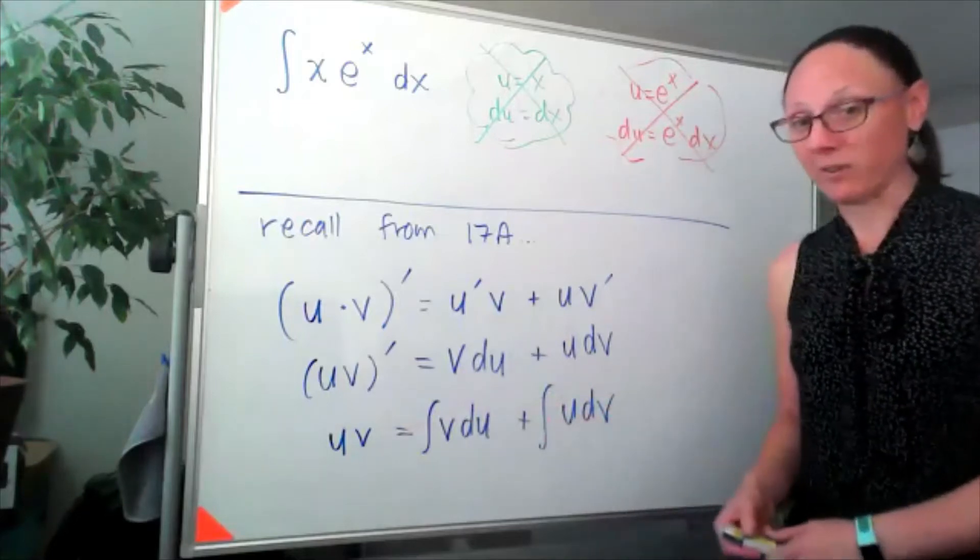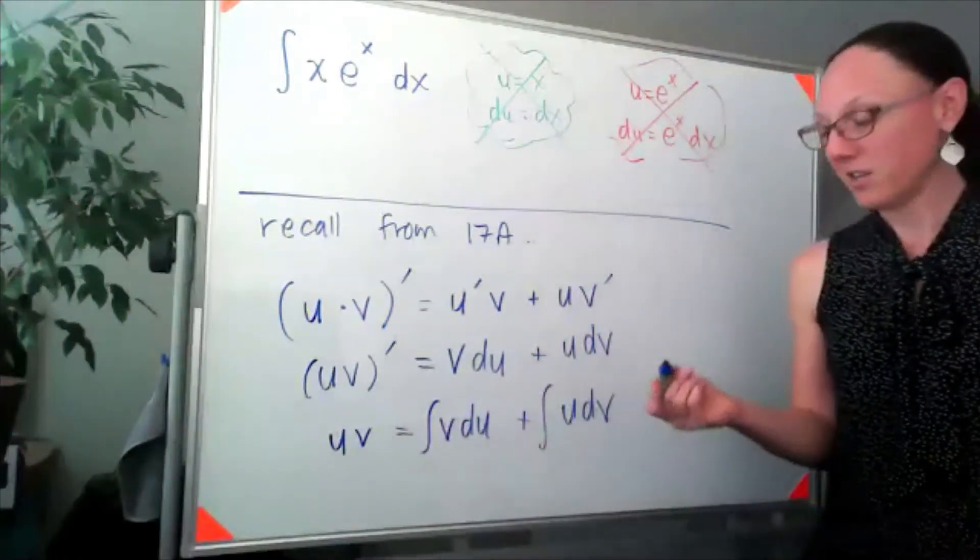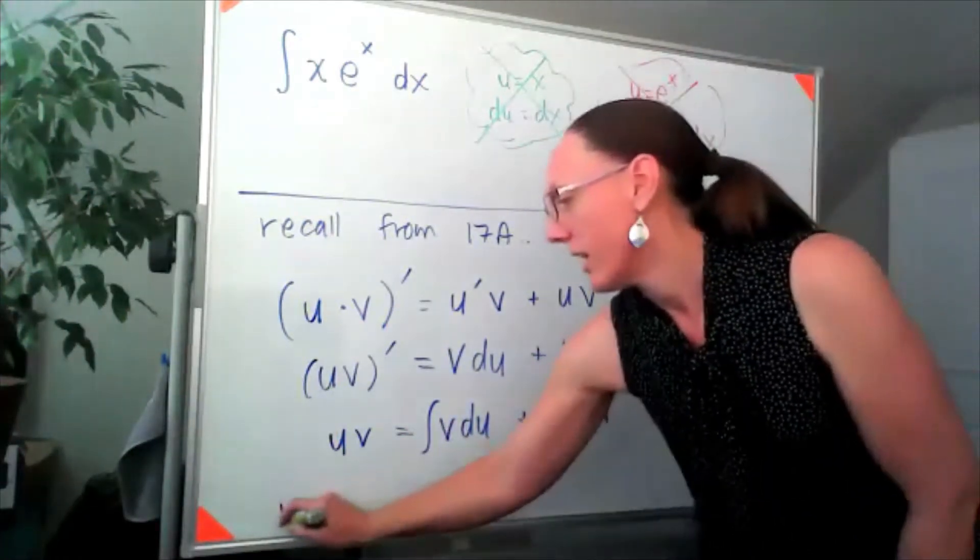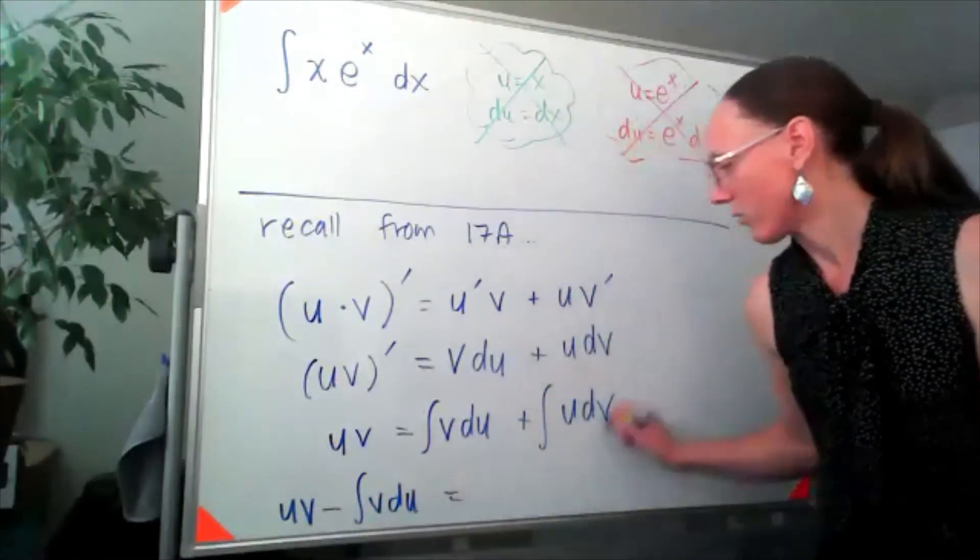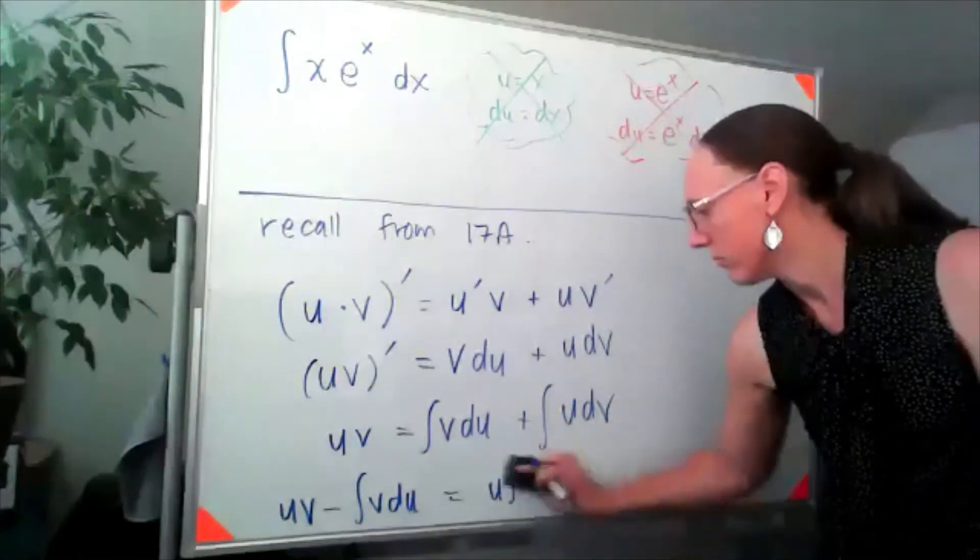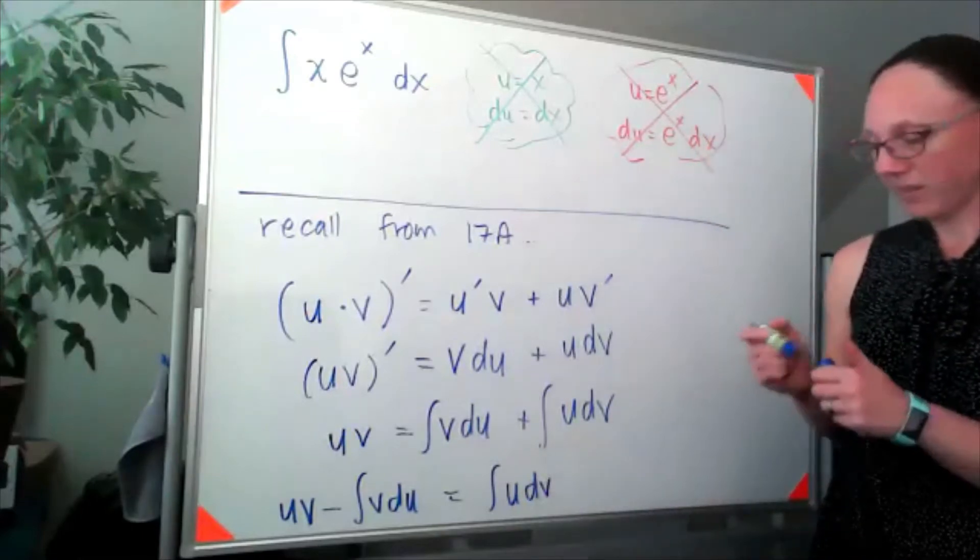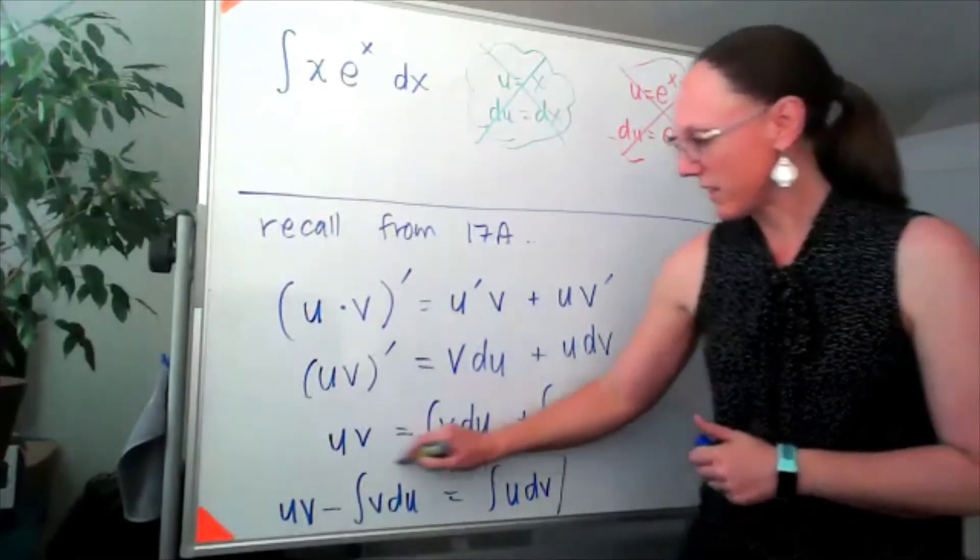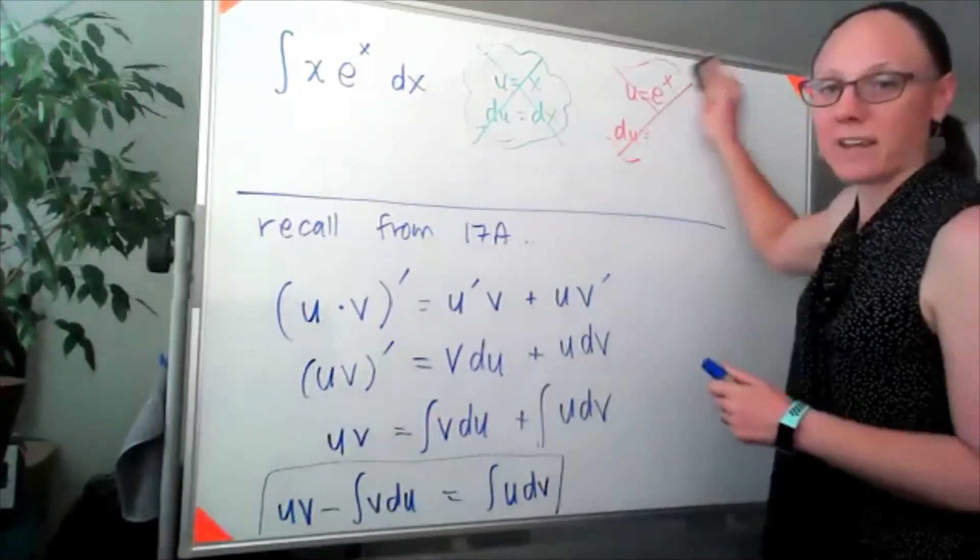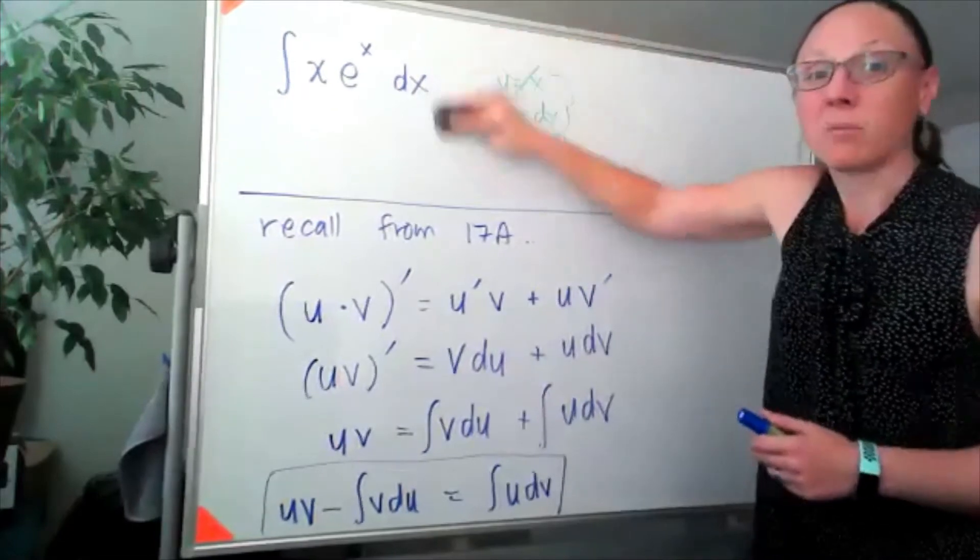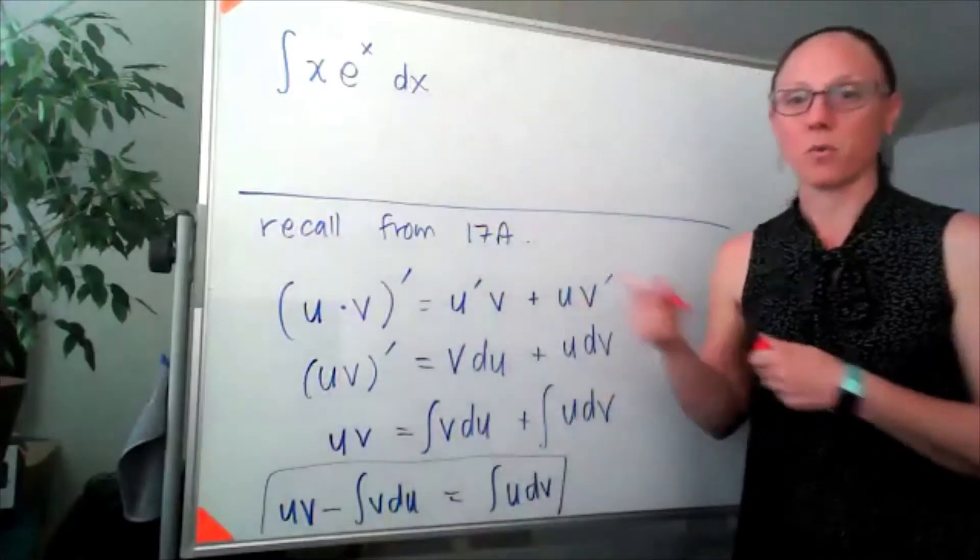So this is an equation, which means I can move things around. I'm going to take this piece and subtract it from both sides. So that over here on the left, I have uv minus the integral of v du. And over here, I have the integral of u dv. Now this, it turns out, is a really nifty formula that's going to help us out in a pinch for certain types of integrals. And we call this the integration by parts formula.